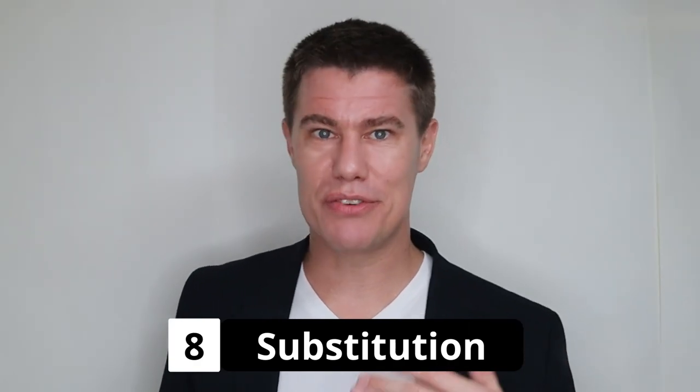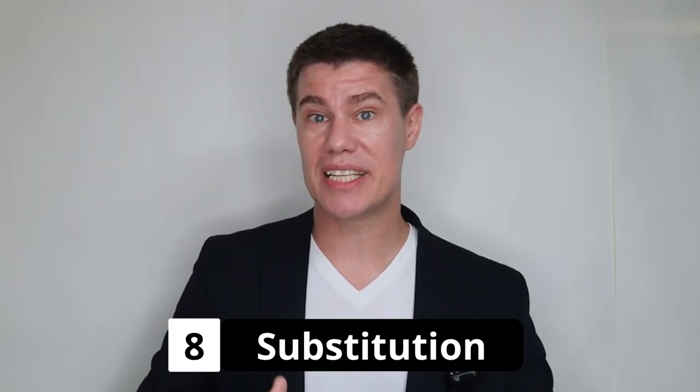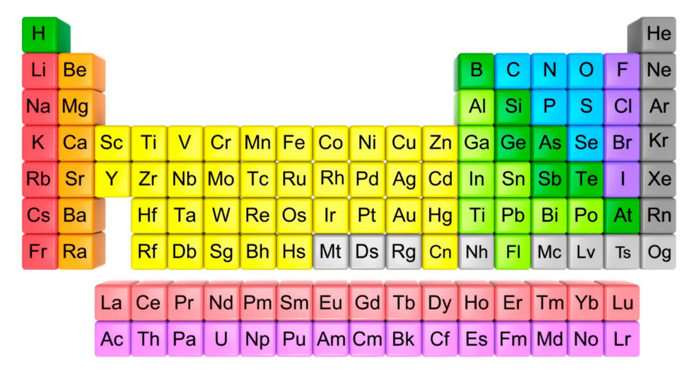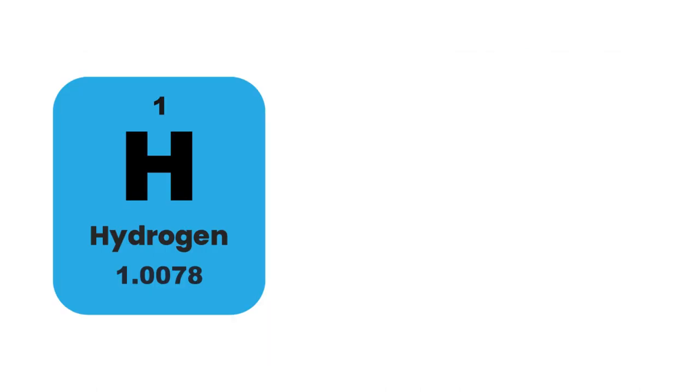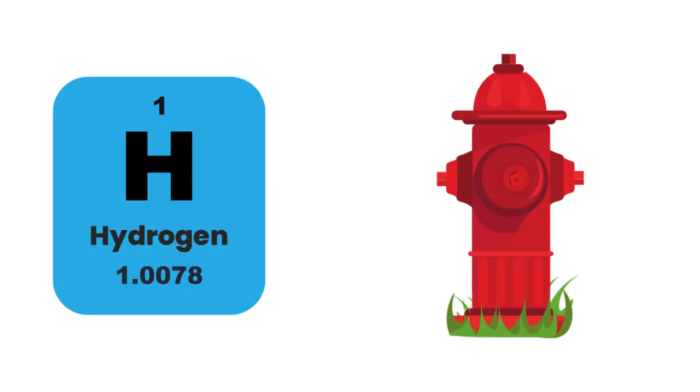The substitution method. This method is very simple — all you need to do is take whatever you want to remember and substitute it with something more memorable. Say you're trying to memorize the periodic table of elements. When trying to remember the first element, hydrogen, you could link it to the word 'hydrant' because they sound similar. Then visualize a bright red fire hydrant on the sidewalk, or practice saying 'hydrogen, hydrant' aloud to emphasize how they sound similar. Substitution is an effective way to register new information in your brain and recall it more easily later.